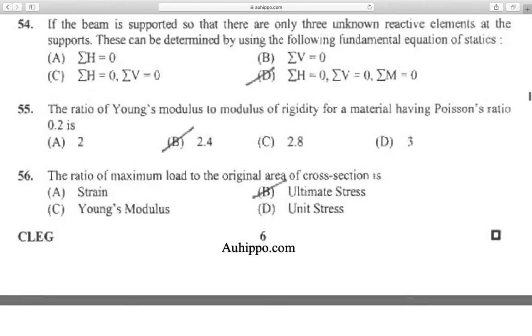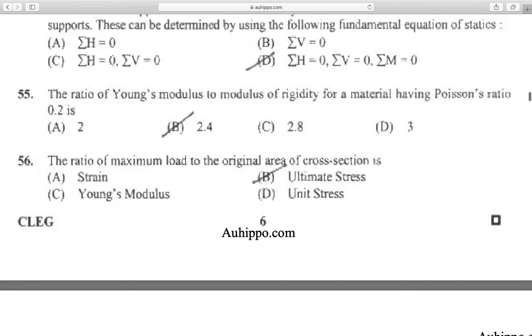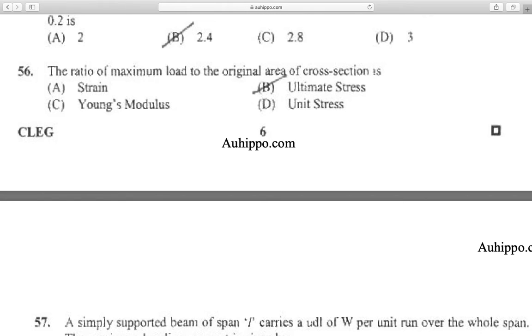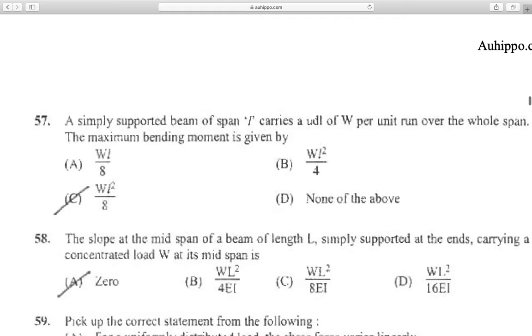Question 56: The ratio of maximum load to the original area of cross section is ultimate stress. Maximum load is also called ultimate stress.